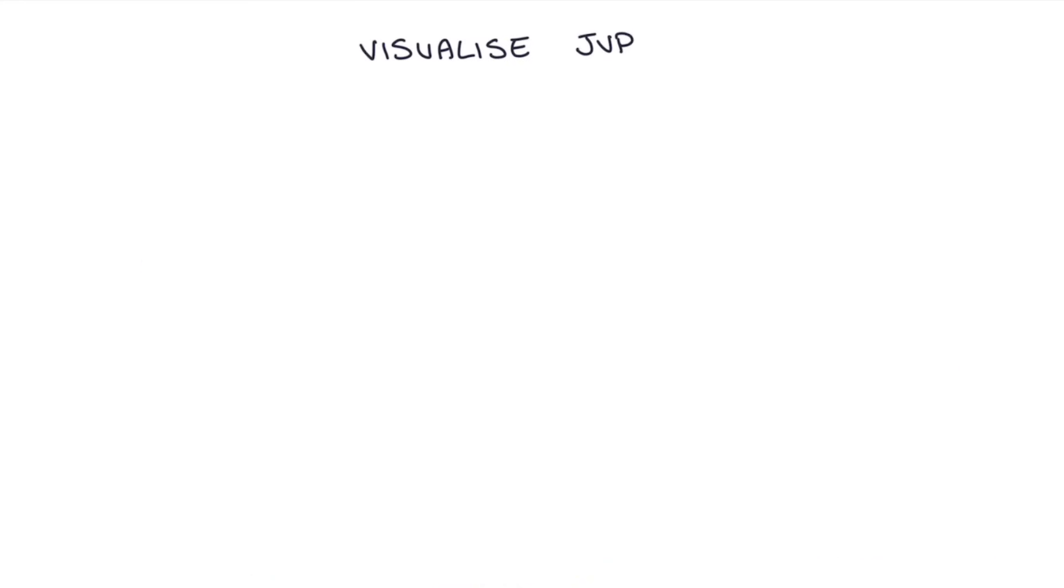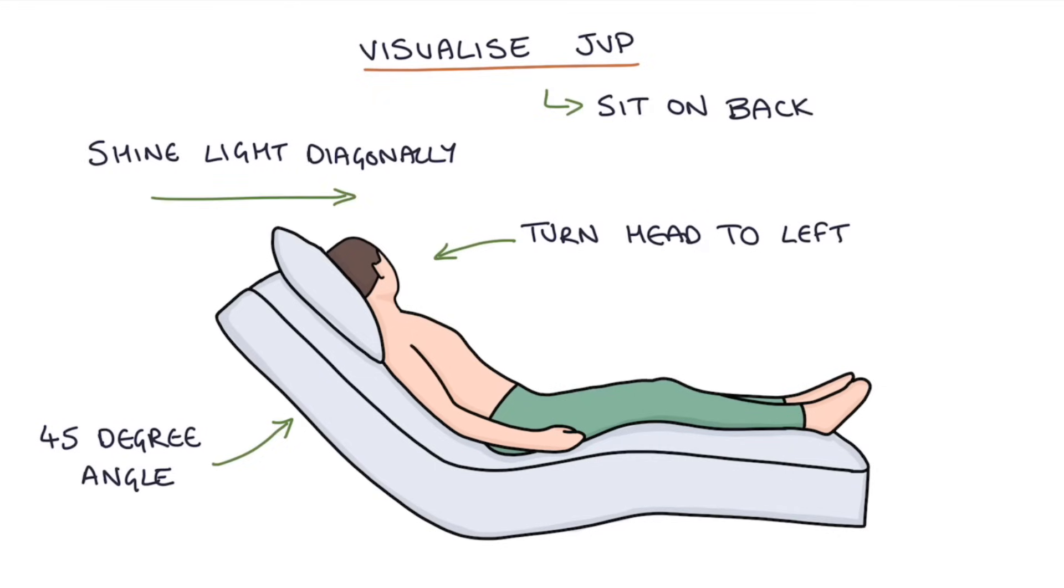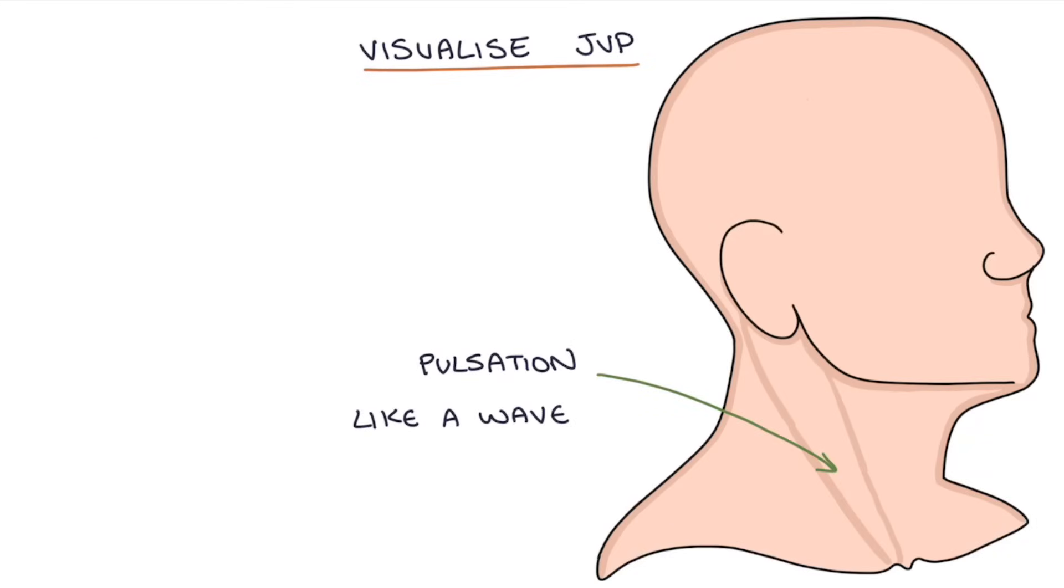To visualize the JVP, have the patient sit on their back at an angle of 45 degrees and get them to turn their head slightly to the left. It's quite useful to shine a light diagonally across the patient's neck so that you can see the change in shadows as you get that JVP pulsation. What you'll see is a pulsation like a wave in the neck with two pulses for each contraction of the heart. So if you feel a patient's pulse and watch their neck, for each beat that you feel you'll see two pulses in the JVP. It's more of a flutter underneath the sternocleidomastoid muscle rather than directly being able to visualize the vein.